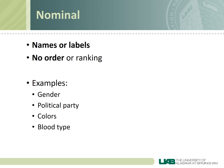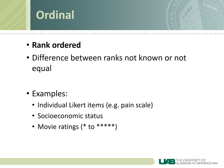Ordinal data is a little more complex because it is rank ordered, indicating a hierarchy, but the differences between the ranks are either not known, not measurable, or simply not equal. For example, patients are often asked to rank their pain on a scale of 1 to 10, with 1 being no pain and 10 being the worst imaginable pain. A score of 5 is worse than a score of 4, but by how much? Is the difference between 2 and 3 the same as the difference between 8 and 9? We really don't know and can't measure it — all we can say is that a higher score means more pain.